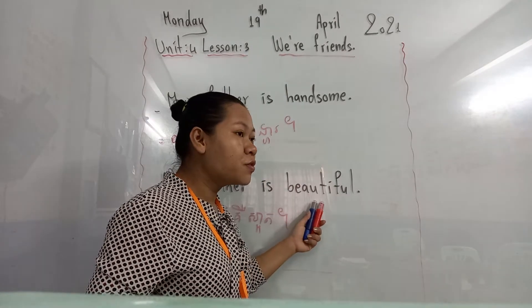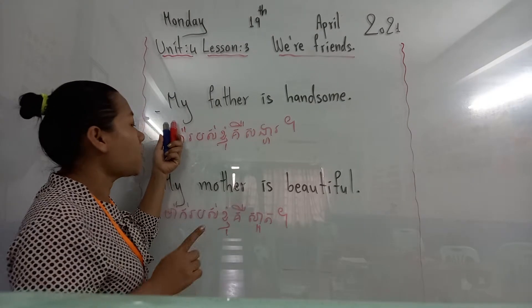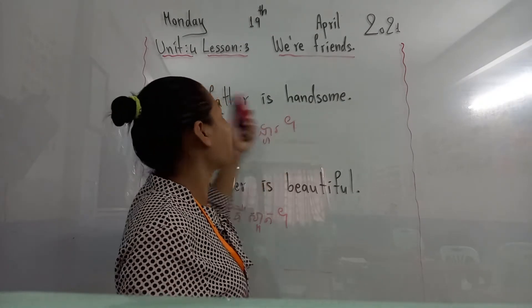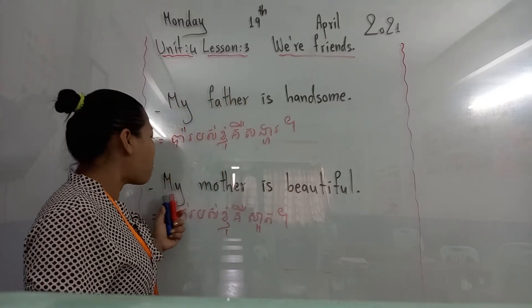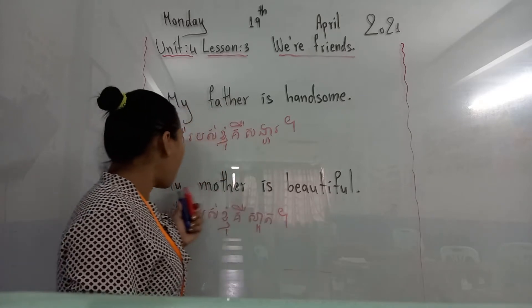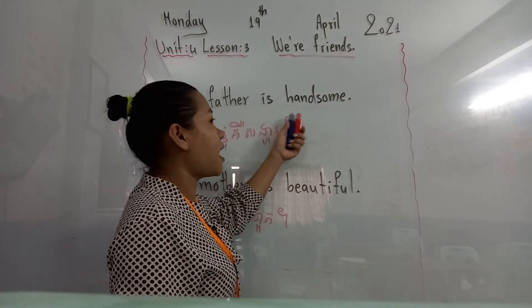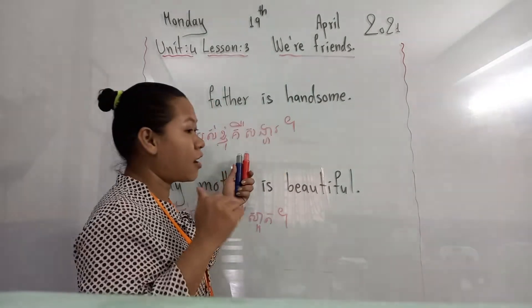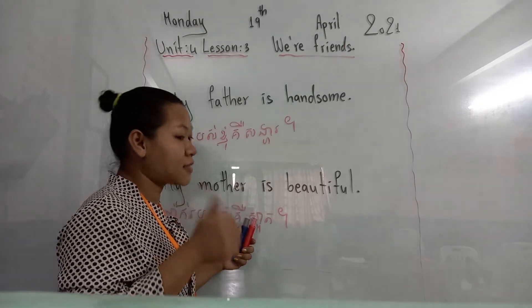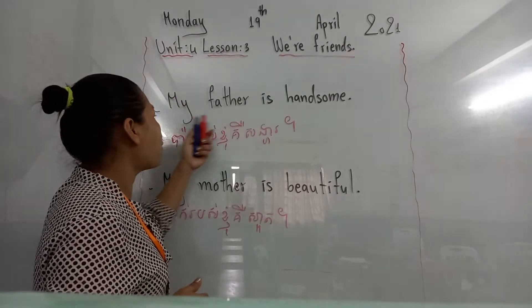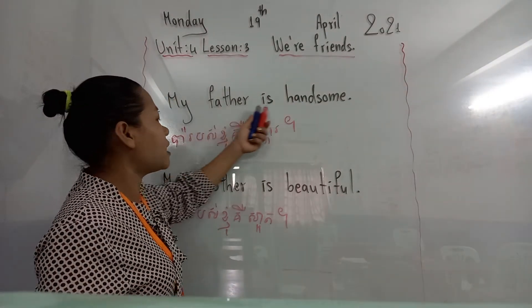Let's start. The first sentence: My father is handsome. My father is handsome. One more: My mother is beautiful. My mother is beautiful. My father is handsome. Now let me show you how to spell it. My father is handsome.